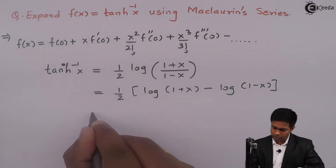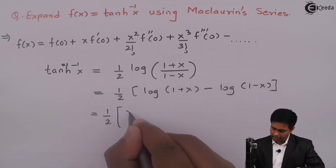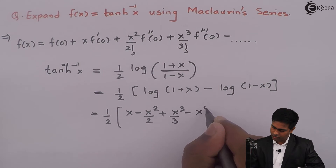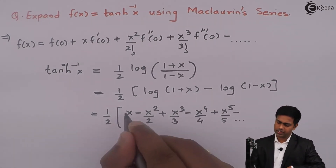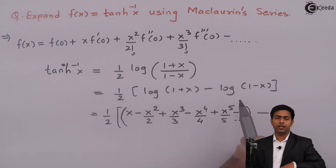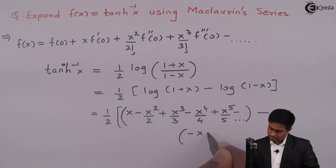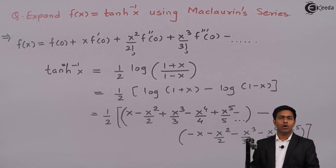Using this approach, with (1/2) outside, the series for log(1+x) is: x − x²/2 + x³/3 − x⁴/4 + x⁵/5 − and so on. Similarly, we subtract the series for log(1−x), which is: −x − x²/2 − x³/3 − x⁴/4 − x⁵/5 and so on.